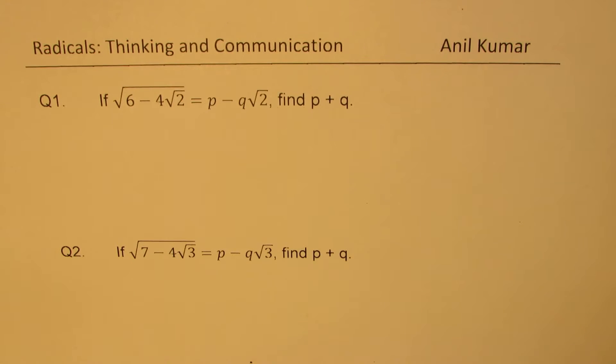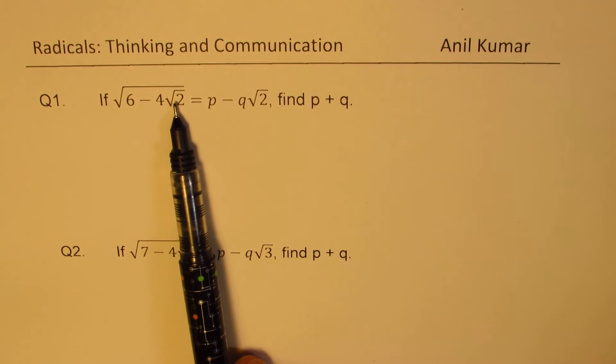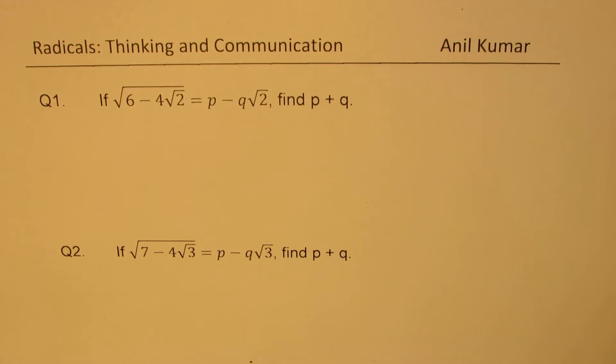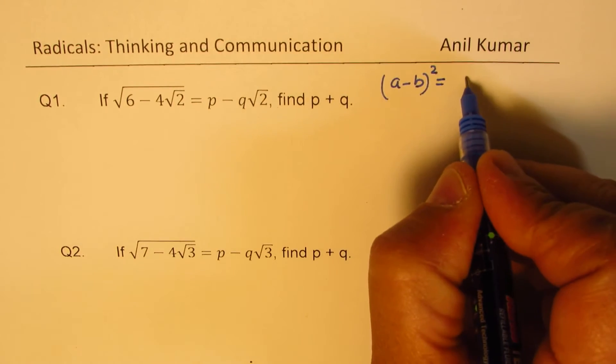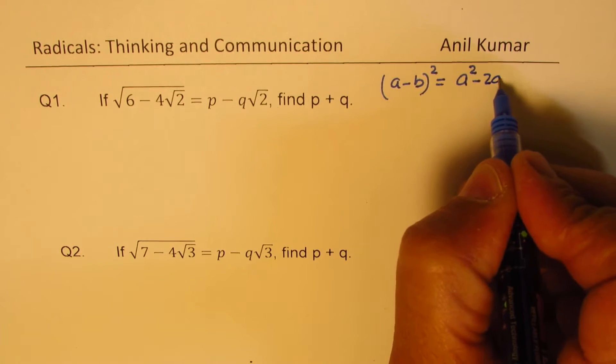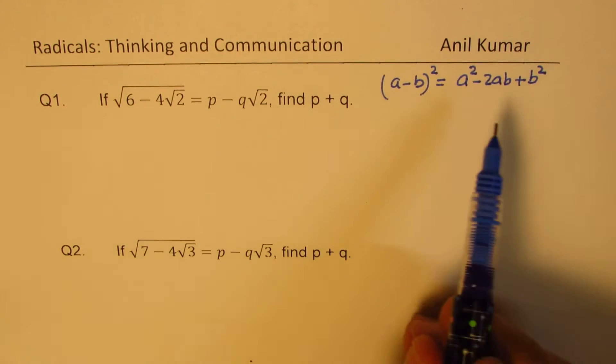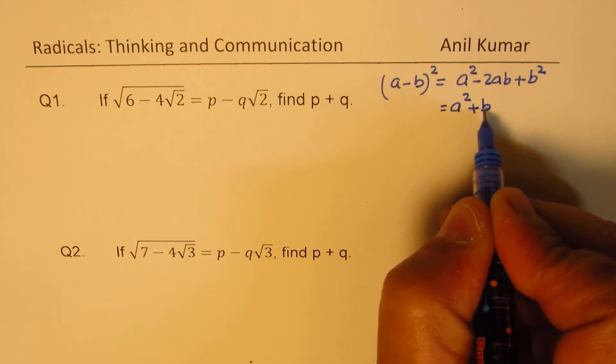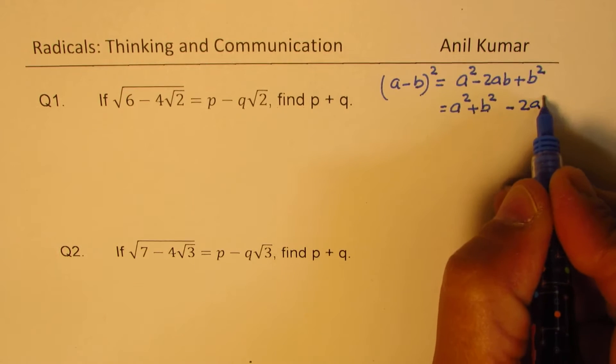So I'd like you to pause the video, try it out, and then look into my suggestions. Now when you look at this question, you can see that 6 can be written as combination of 4 plus 2, and this is like 4 times 2. So you get reminded of what is a minus b whole square. So a minus b whole square is a square minus 2ab plus b square. So the strategy here is to write 6 as sum of squares. We could also write this as a square plus b square, that is sum of squares, minus 2 times a and b. That is the strategy.